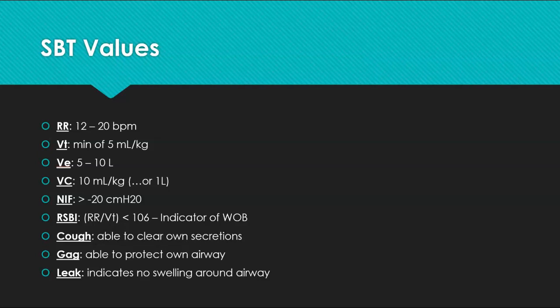Vital capacity: minimum 10 mL/kg, or roughly above a liter for most patients. NIF: you want negative 20 or more negative — so negative 30 is better than negative 10. RSBI is respiratory rate divided by tidal volume; you want it less than 106, though most doctors prefer less than 80. A lower RSBI means lower work of breathing. Also confirm the patient can cough to clear secretions, has a gag to protect their airway, and check for a cuff leak which indicates the upper airway swelling has resolved.